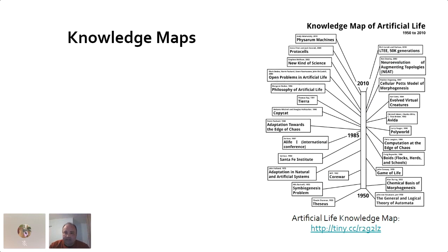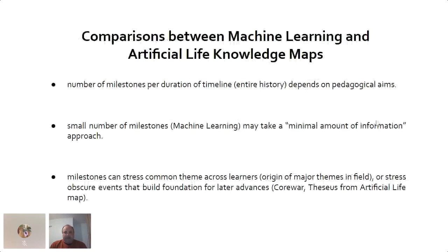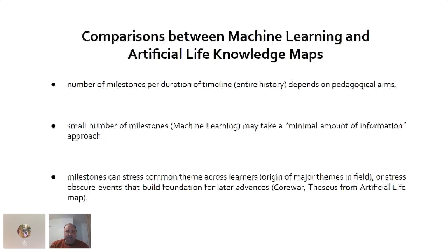You can navigate to one of these events — for example, 'Open Problems in Artificial Life' was a published conference proceeding, so you have names, a date, and can find out more. One thing to keep in mind is the number of milestones per duration of timeline: the artificial life map is much more dense than the machine learning map, which is important if you're trying to teach more intimate history of the field.